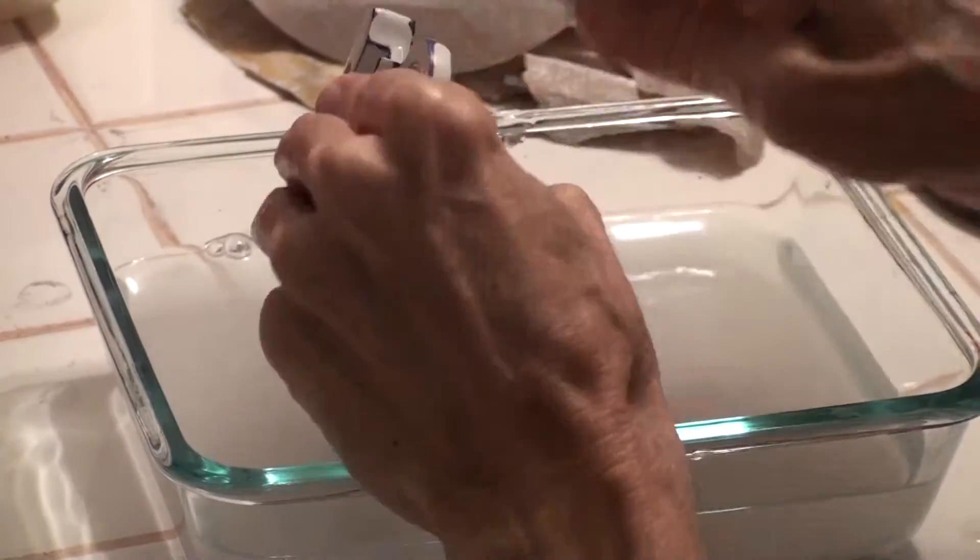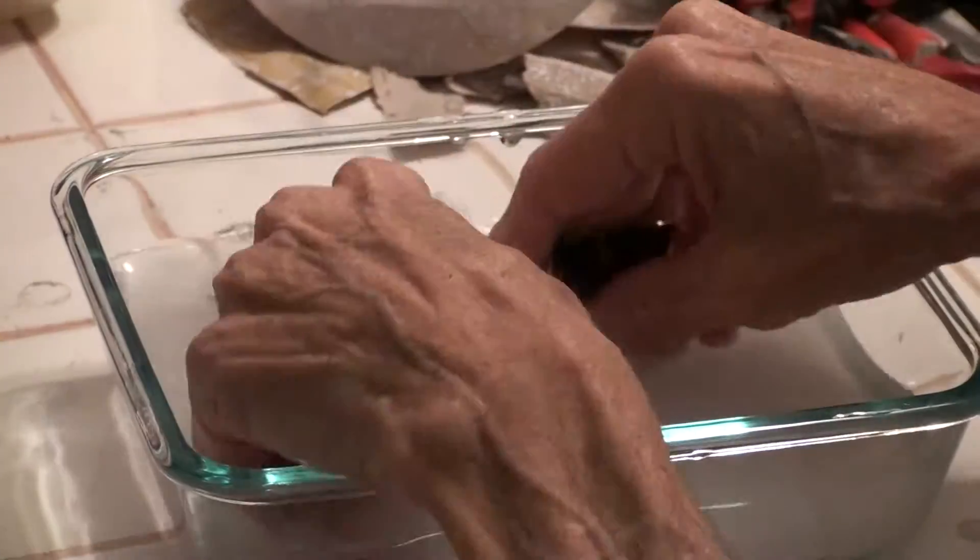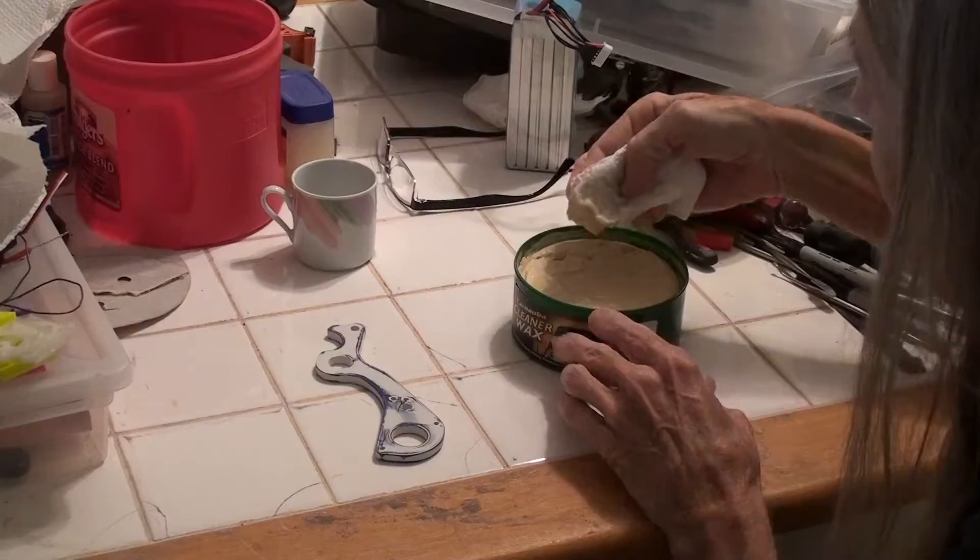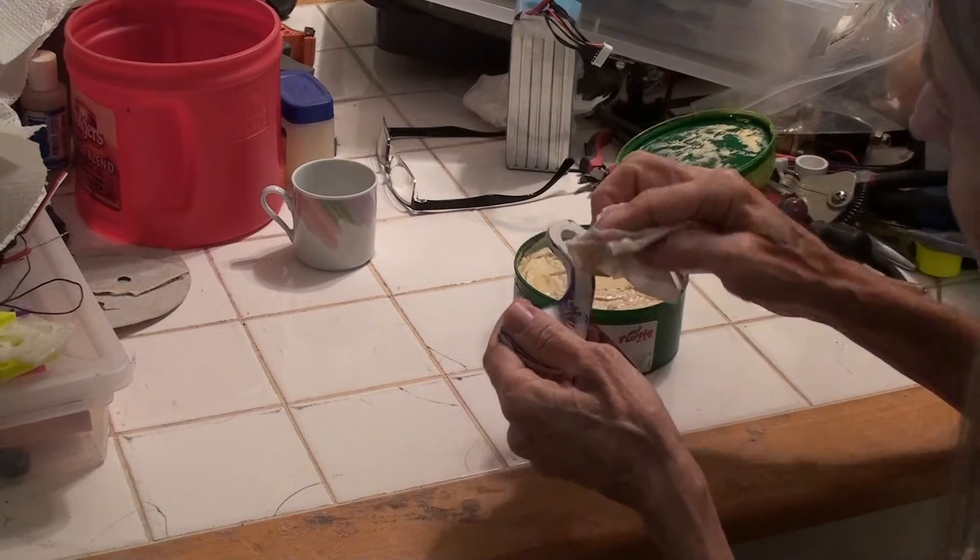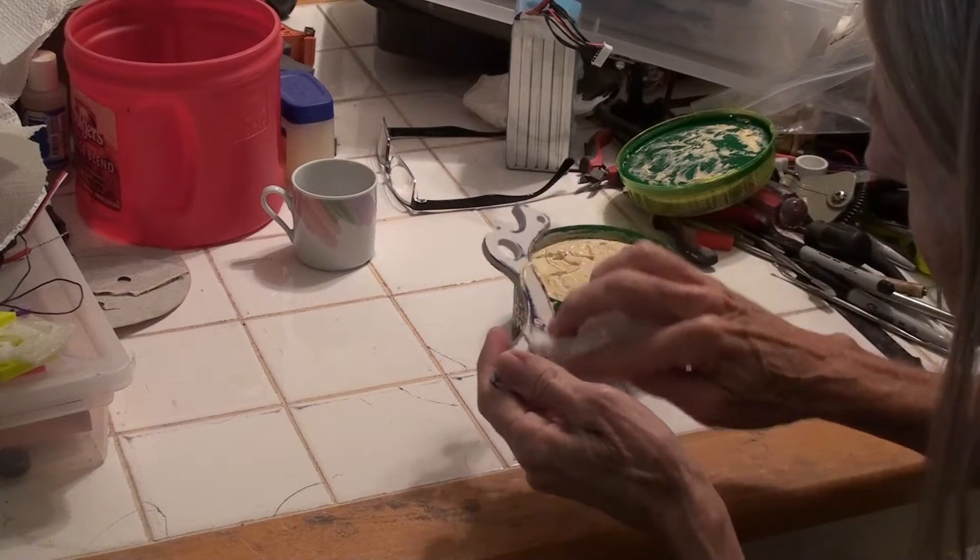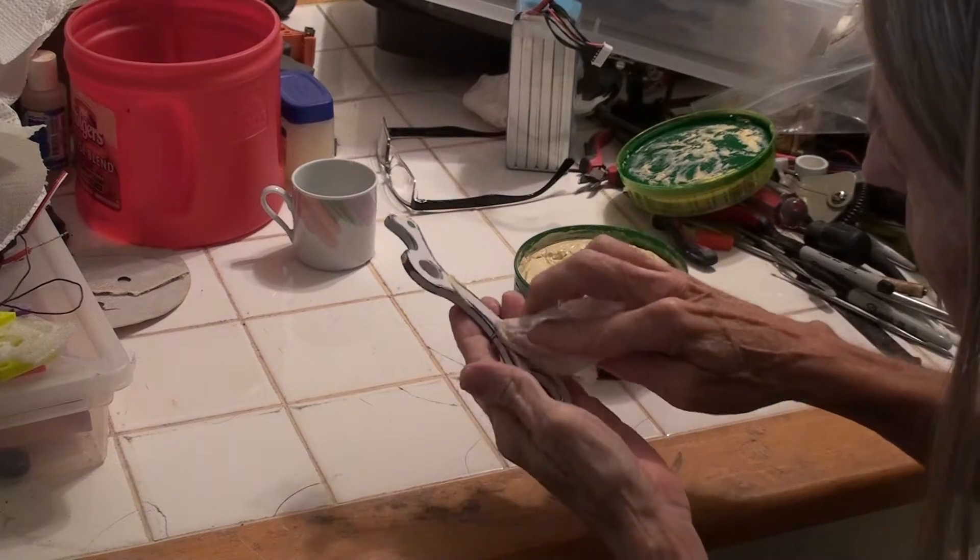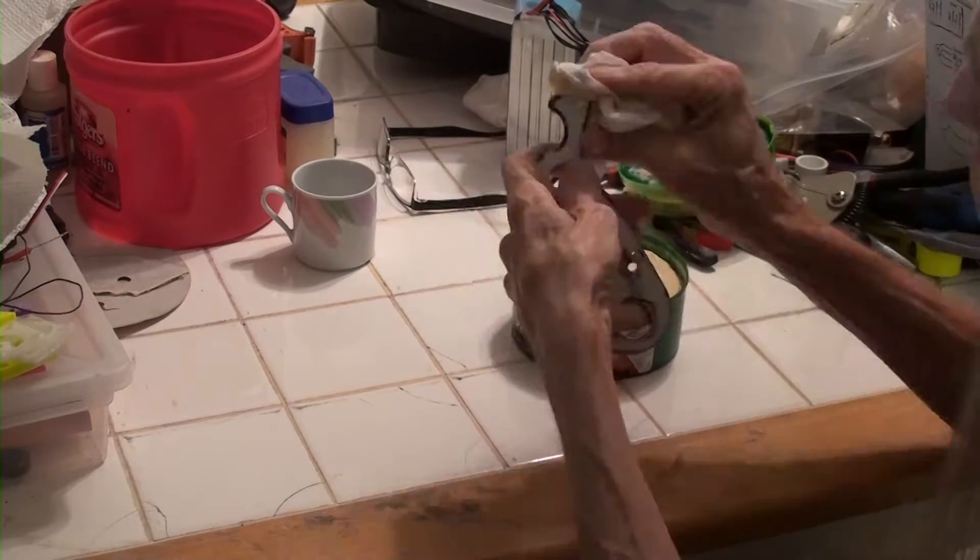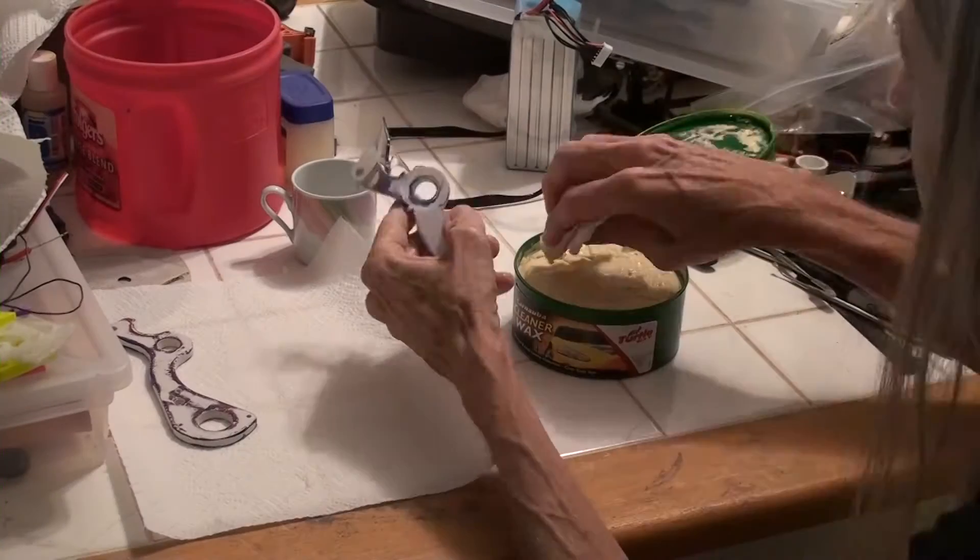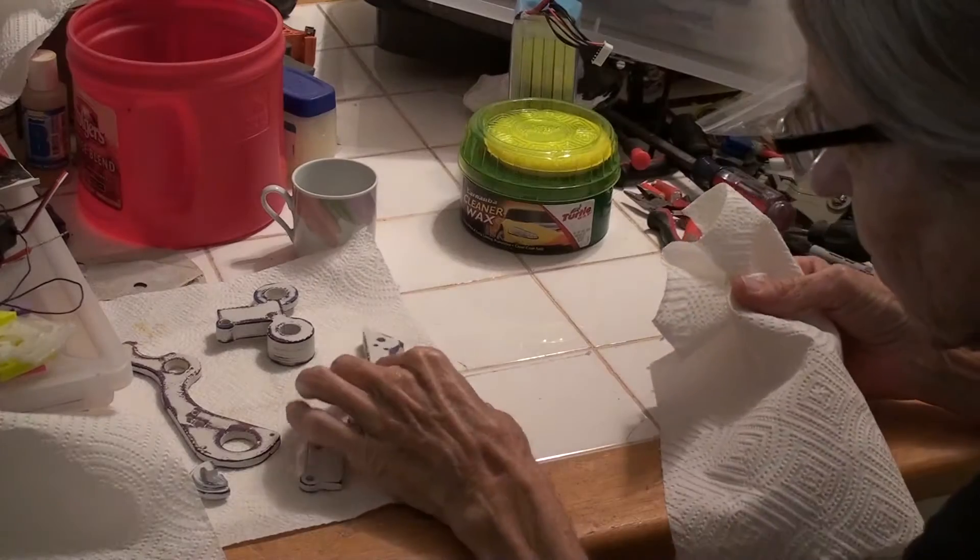By the time you're finished sanding the part with the 800 grit sandpaper, it'll have a glossy finish to it. I can improve the gloss by putting a coat of paste wax on the parts. This is just like waxing your car.